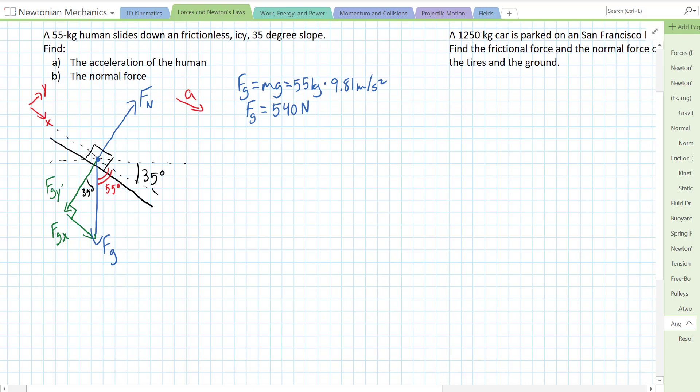So then I'm going to solve my right triangle. I'm going to redraw it out here. We have a right triangle that looks like this. This is 35 degrees up here. My force of gravity is 540 newtons. And this is my fgy, fgx.